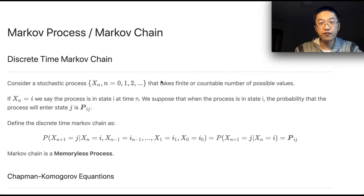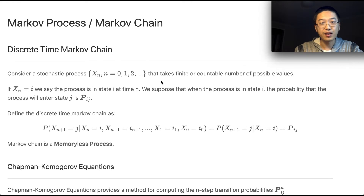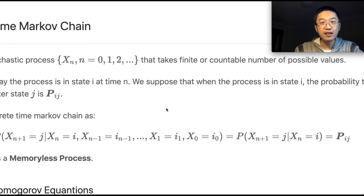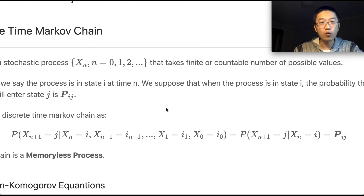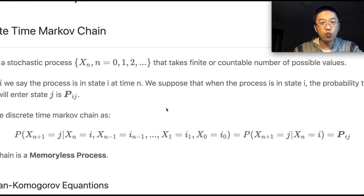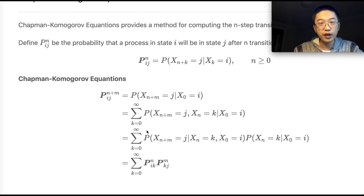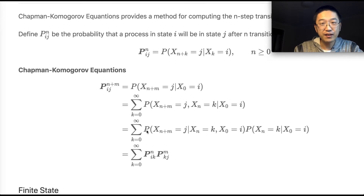From the last Markov chain video, we defined what a Markov chain is: it's a memoryless process — given a history of previous states, it only cares about the current state. We also introduced the Chapman-Kolmogorov equations, which say to calculate the n-step probability by summing probabilities over an intermediate state.